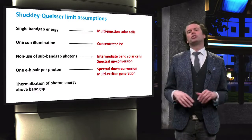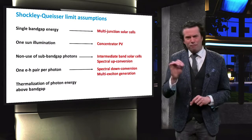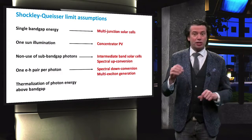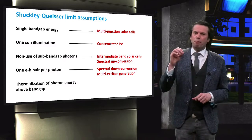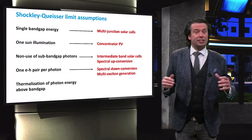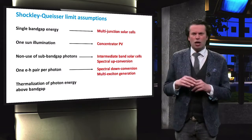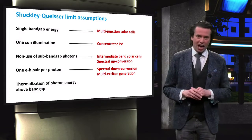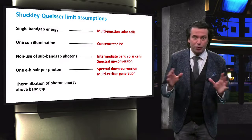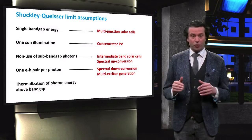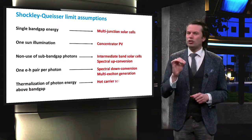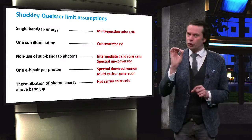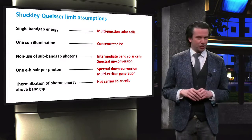The final assumption we will discuss is that any photon energy above the bandgap is lost due to thermal relaxation. Even if more than one electron hole pair is generated by a single high energy photon, most photons will not have an exact multiple of the bandgap energy, and therefore thermal relaxation will still occur. Hot carrier solar cells focus on reducing the thermalization energy loss.